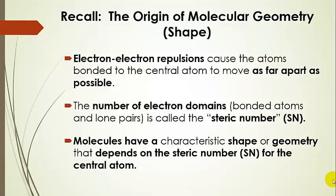In the last video, we learned how to count the number of electron domains, and we called that the steric number — it's the number of bonded atoms and lone pairs around the central atom. After you determine those, molecules have a characteristic shape that depends on the steric number for the central atom.